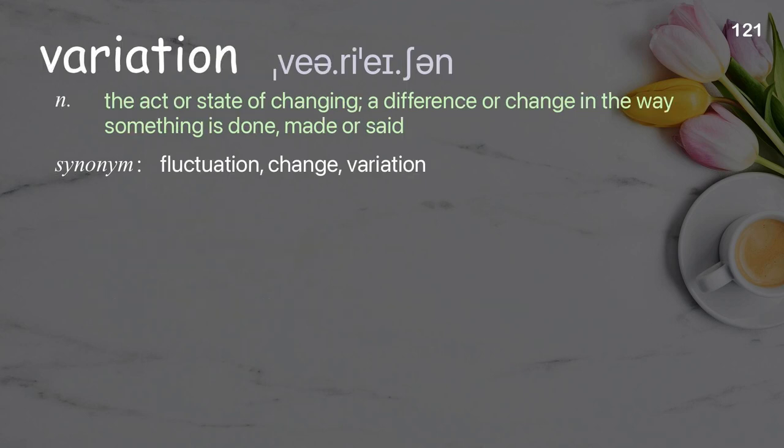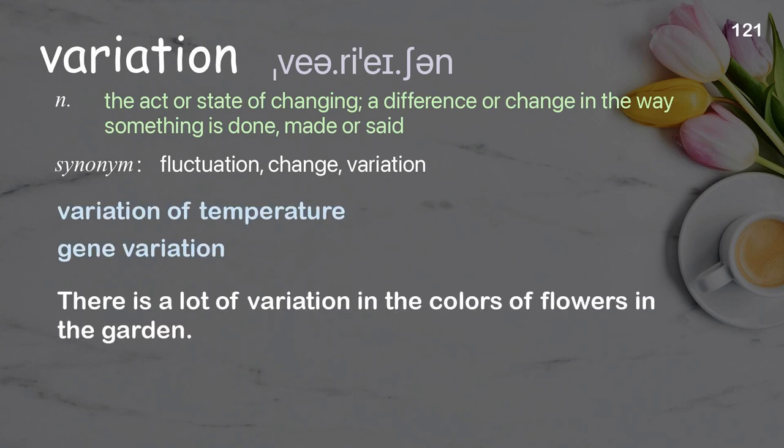Variation: the act or state of changing; a difference or change in the way something is done, made, or said. Examples: variation of temperature, gene variation. There is a lot of variation in the colors of flowers in the garden.